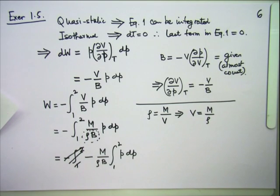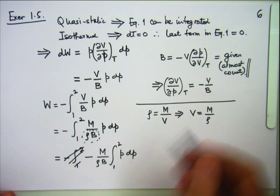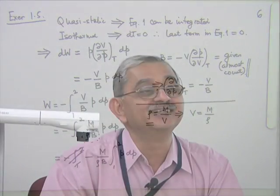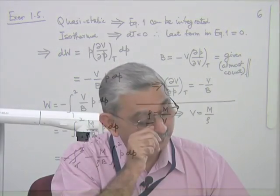The word 'almost constant' in the problem is crucial. If density were exactly constant, the material would be truly incompressible, volume would not change, and there would be no work done on compression. Exercises 1.6 and 1.7 are of a similar kind except that the variation of force with displacement is given directly. After these problems, we move to the real main part of thermodynamics: the first law.